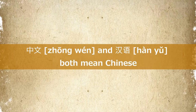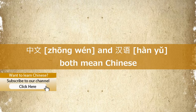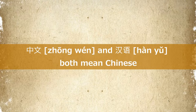Today, I will be teaching you the word 中文. In Chinese, people refer to the Chinese language as 中文 or 汉语. The difference between the two is that 中文 refers to Chinese characters, while 汉语 refers to the language spoken by the Han nation.